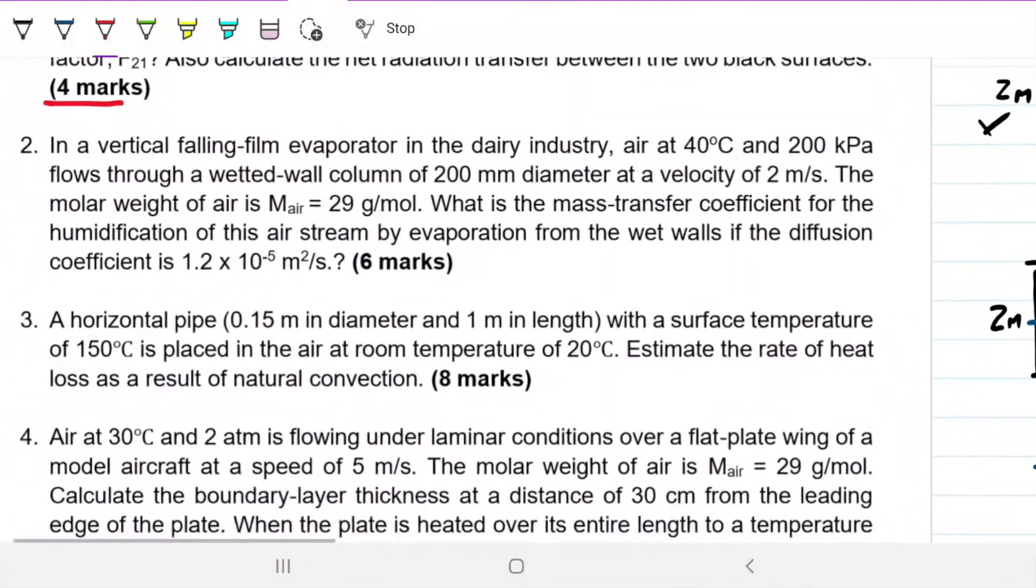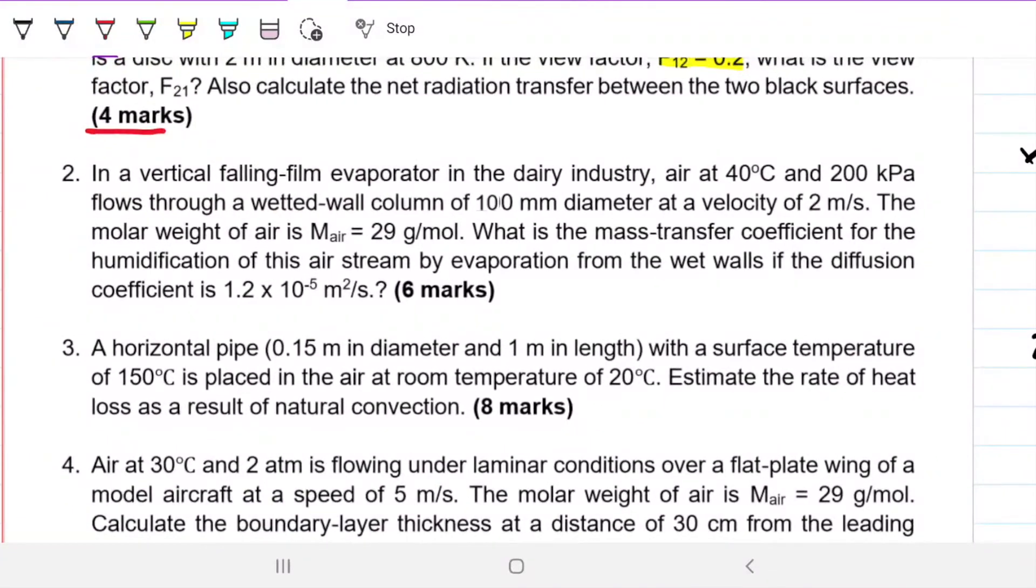Now we're jumping to question number two, which is around mass transfer. The problem statement reads: In a vertical falling film evaporator in the dairy industry, air at 40 degrees Celsius and 200 kilopascals flows through a wetted wall column of 200 millimeters in diameter at a velocity of 2 meters per second. The molar weight of air is 29 grams per mole. What is the mass transfer coefficient for the humidification of this airstream by evaporation from the wet walls if the diffusion coefficient is 1.2 times 10 to the minus 5 meters squared per second?